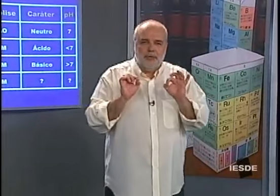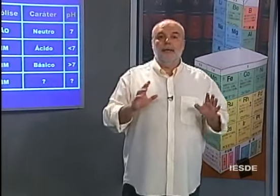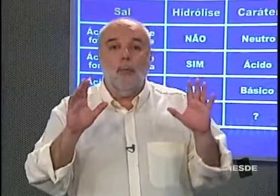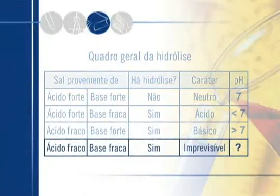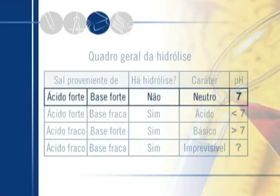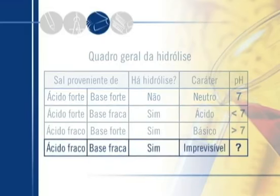O caso final: tanto o ácido de origem quanto a base de origem, ambos são fracos. Há hidrólise? Sim. E o caráter? Imprevisível. Eu não sei entre esses dois fracos quem predomina. Logo, o pH nada sei afirmar. É diferente do caso em que ambos são fortes — quando ambos são fortes, nada acontece, não há hidrólise, o meio é equivalente à água pura e o pH é 7. Aqui há hidrólise, uma reação ocorreu, e quem predominou, não sei.